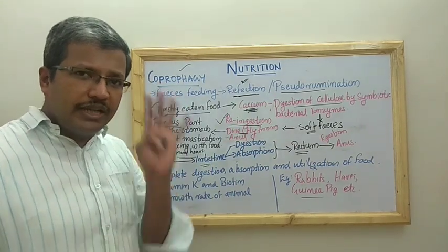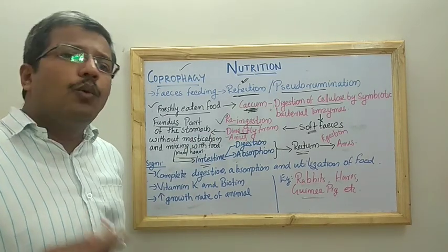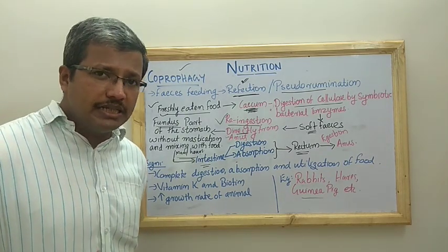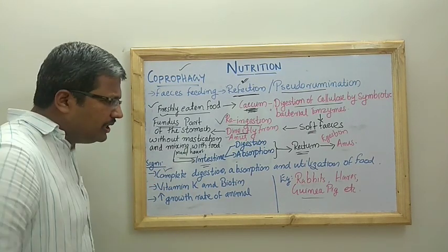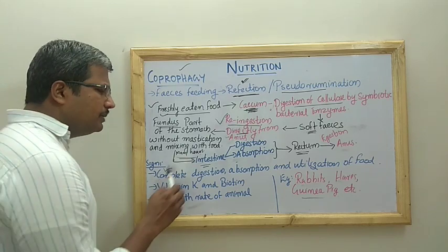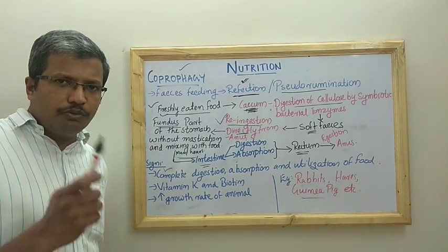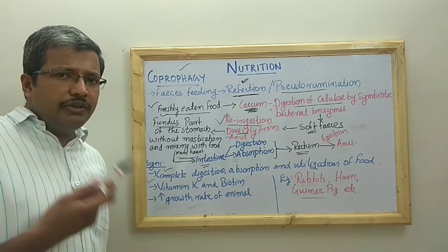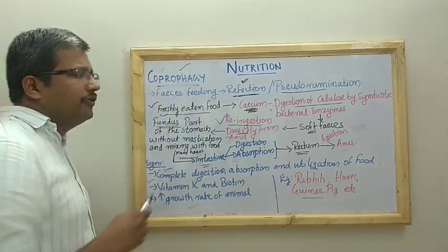Now let us see the significance of coprophagy — for what purpose do organisms eat their own fecal matter? First of all, it increases the digestion process, increases the utilization of food, and increases the absorption of nutrients. Complete digestion, absorption, and utilization of food is the main significance of this mechanism. Additionally, vitamin K and biotin levels will be increased; these are regulatory nutrients and they are increased with the help of coprophagy.